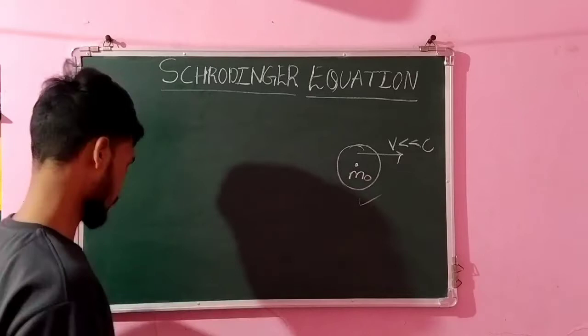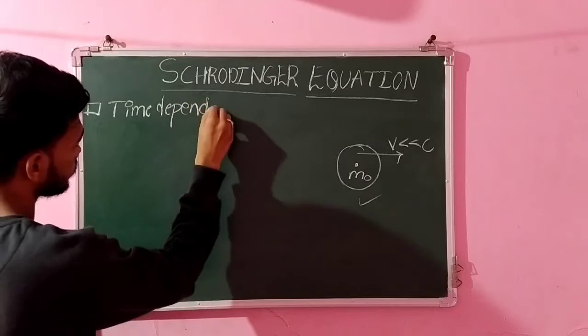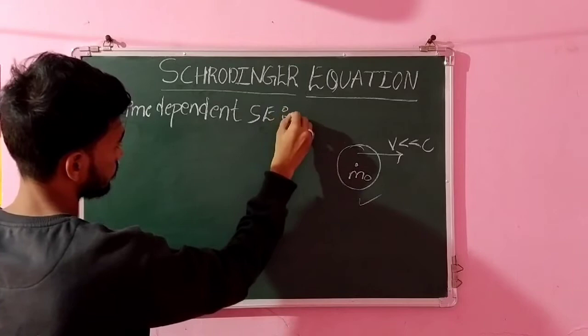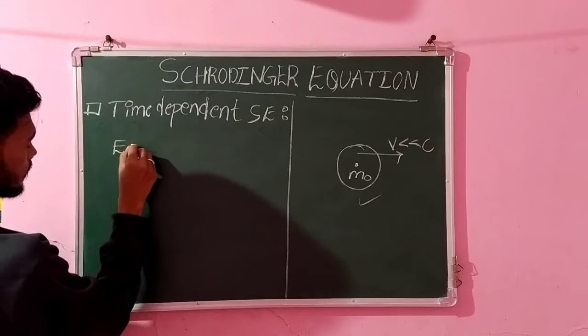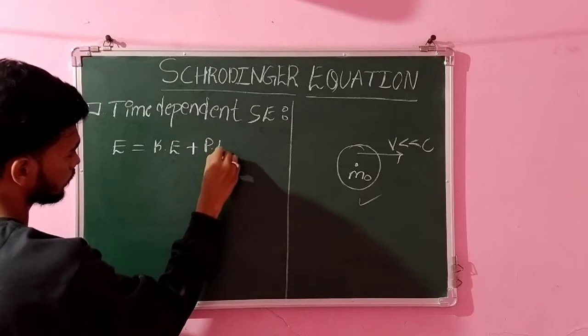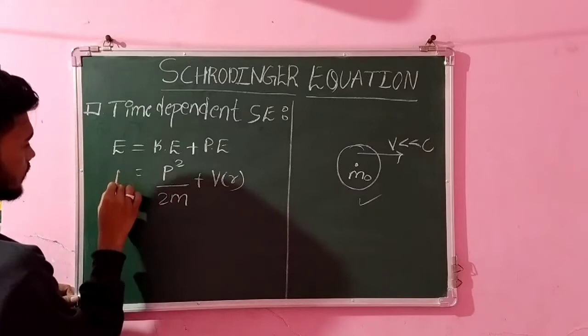So first let's derive time-dependent Schrödinger equation. As you know that, energy of a non-relativistic particle is given by E equals kinetic energy plus potential energy. So kinetic energy can be written as P squared by 2M plus potential energy as V of R and E as it is.